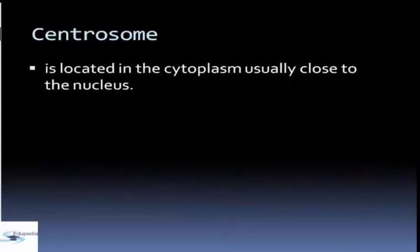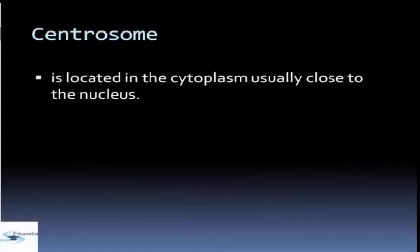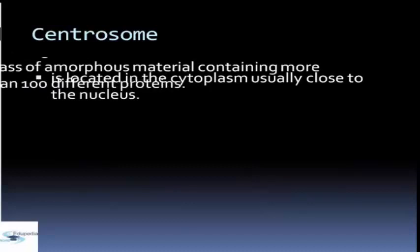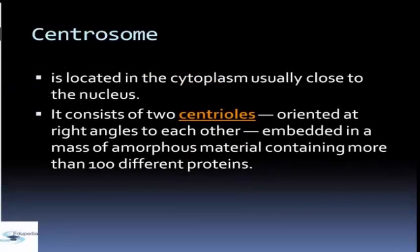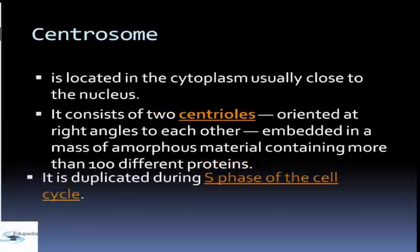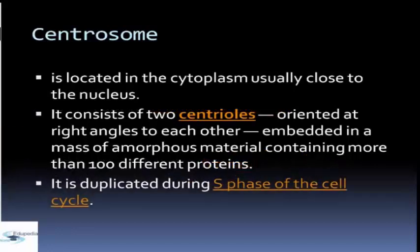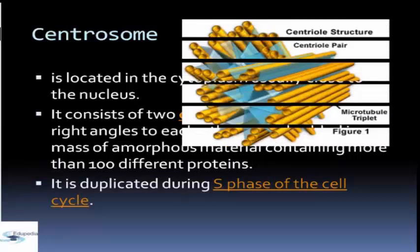Centrosome is located in the cytoplasm, usually close to the nucleus. It consists of two centrioles oriented at right angles to each other, embedded in a mass of amorphous material containing more than 100 different proteins. It is also duplicating during S phase of the cell cycle.